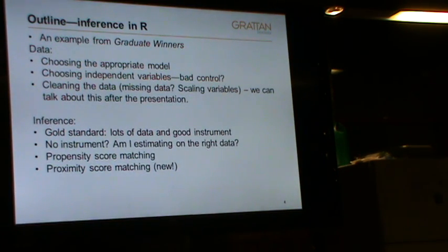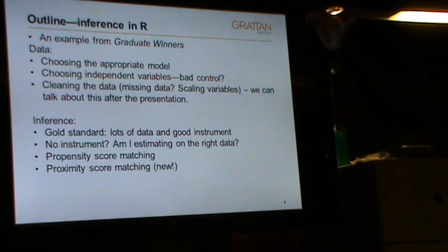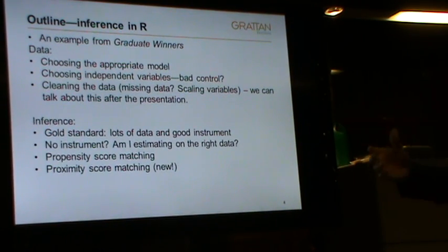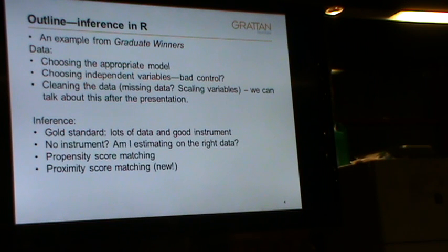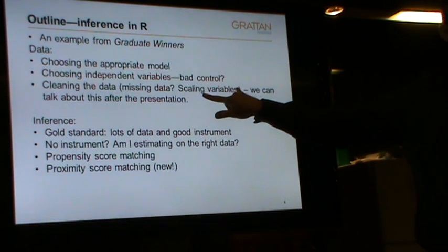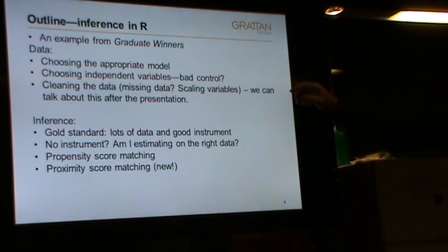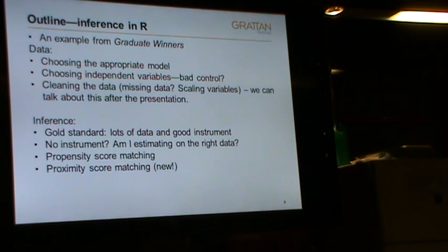Tonight I'll tell you a bit about our report Graduate Winners, which generated quite a stir, and how we did some of the analysis in R — going through the process from choosing the data itself, choosing the appropriate model, what independent variables to use. And then moving on to inference. We really want to discover some causal effect of university on other things. The problem is we can't randomly assign a university pill to some people and a placebo to others, so we don't get to do a randomised control trial.